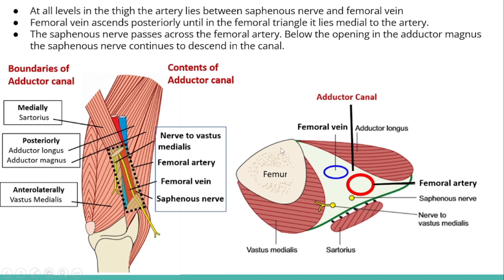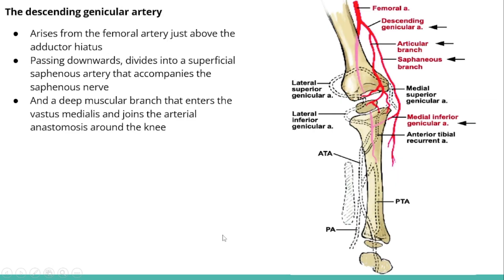In this picture you can clearly see the contents of the adductor canal. In the upper part of the canal we can also see the nerve to vastus medialis. A note about the descending genicular artery: it arises from the femoral artery just above the adductor hiatus.